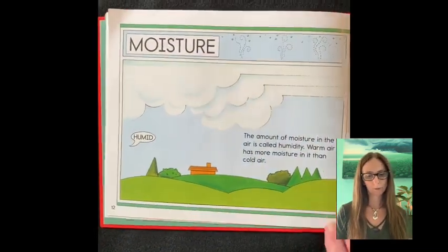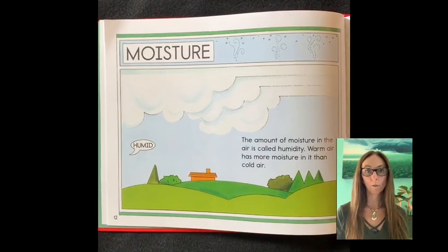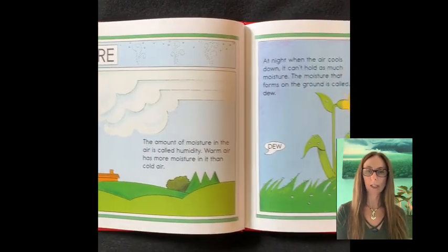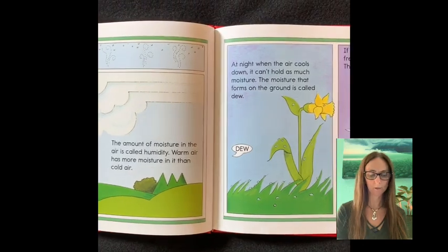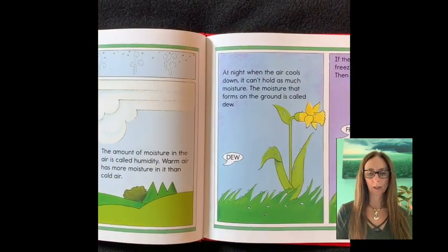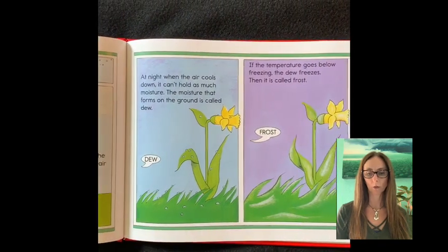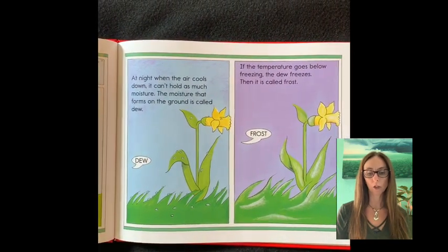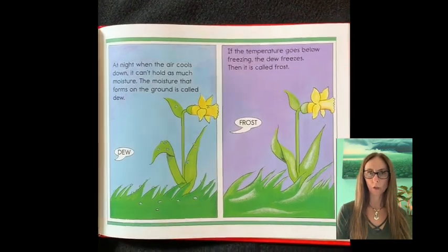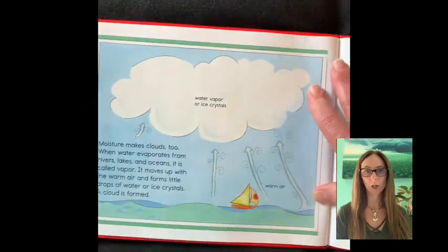Moisture. The amount of moisture in the air is called humidity. Warm air has more moisture in it than cold air. At night, when the air cools down, it can't hold as much moisture. The moisture that formed on the ground is called dew. If the temperature goes below freezing, the dew freezes. Then it's called frost.